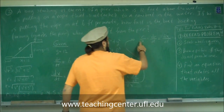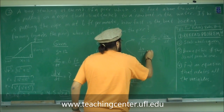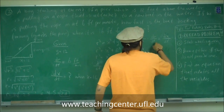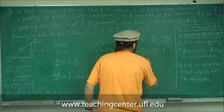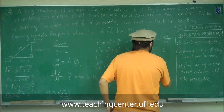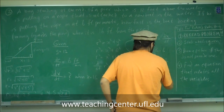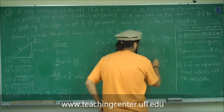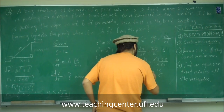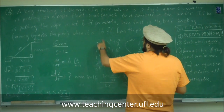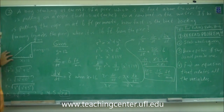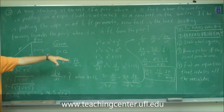Now we have R=20, X=16, and dr/dt=6, so we can solve for dx/dt. dx/dt = (20/16) × 6. Simplifying: 20 × 6 = 120, and 120/16 reduces to 15/2. The units are feet per minute. So the boat is approaching the pier at 15/2 feet per minute.